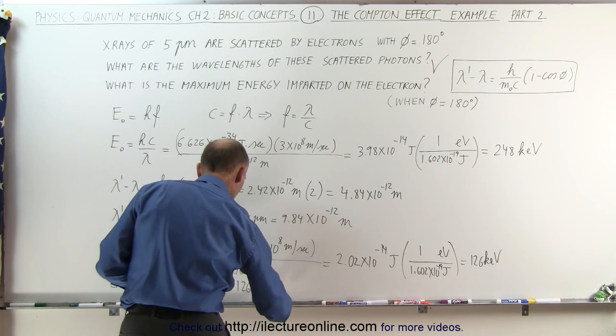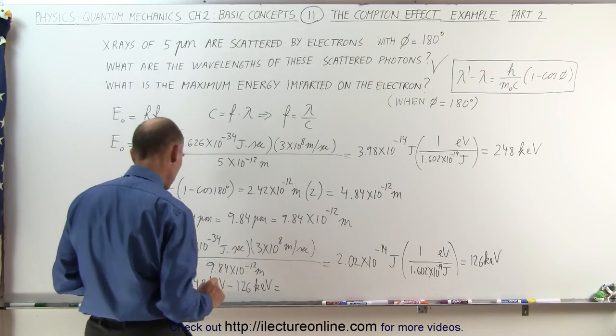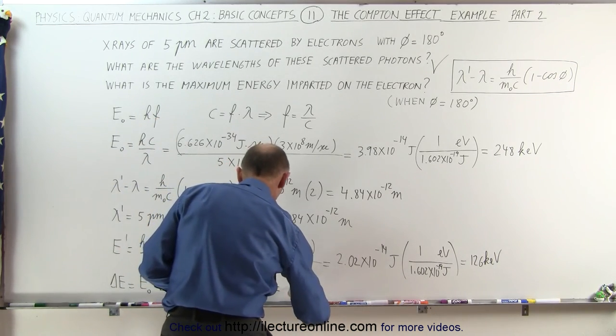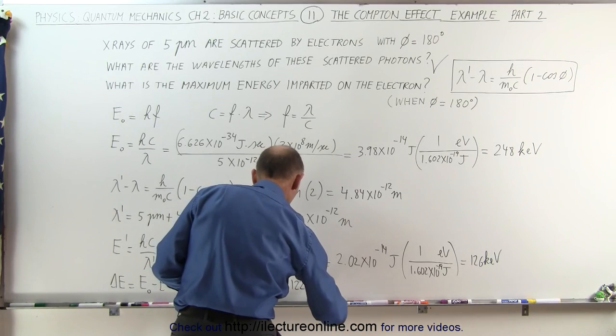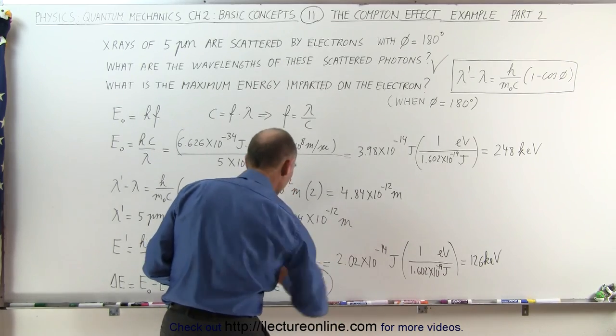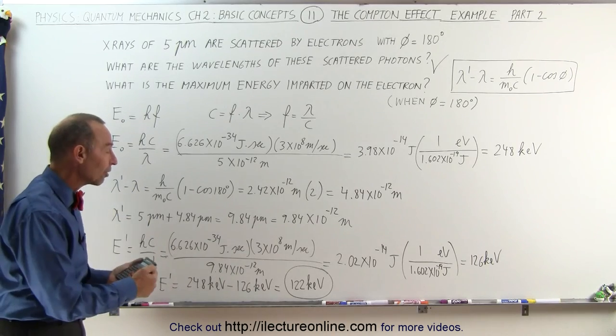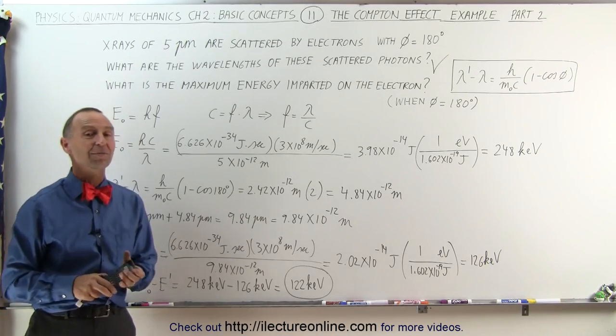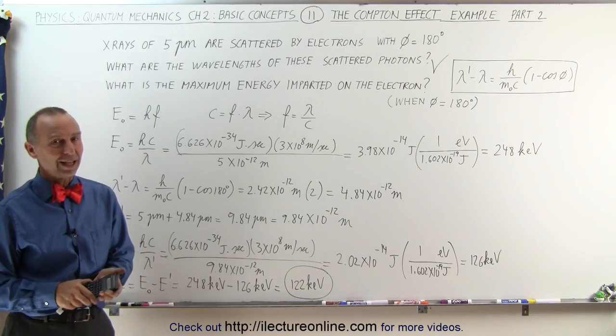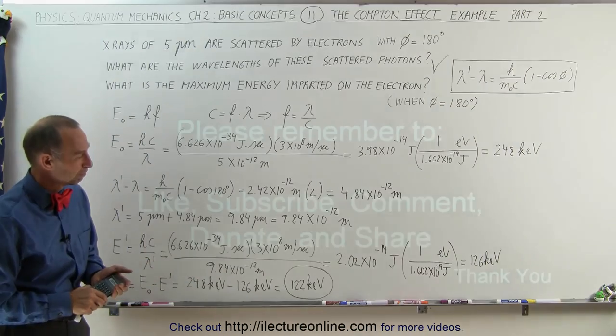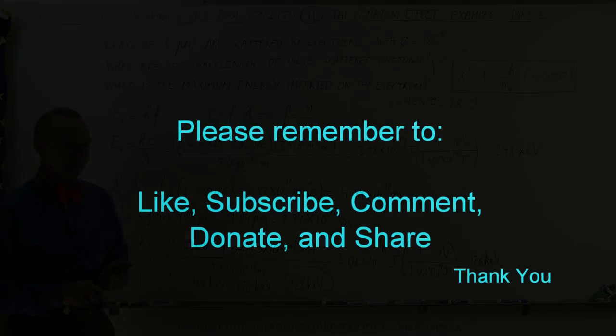That was the energy loss of the photons, which would then be the energy gain of the electrons which were hit by those photons. And that's how we calculate that. Thank you.